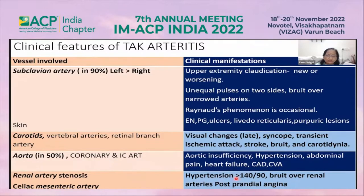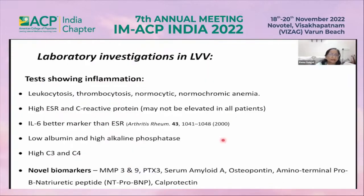Renal artery stenosis is very common; bruits over the renal arteries may be heard, and celiac and mesenteric artery involvement leads to postprandial angina. On investigations, patients show leukocytosis, thrombocytosis, and normocytic normochromic anemia.